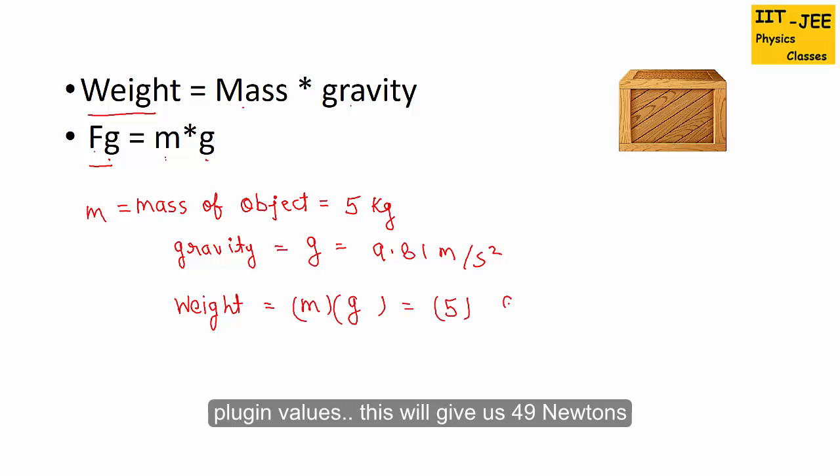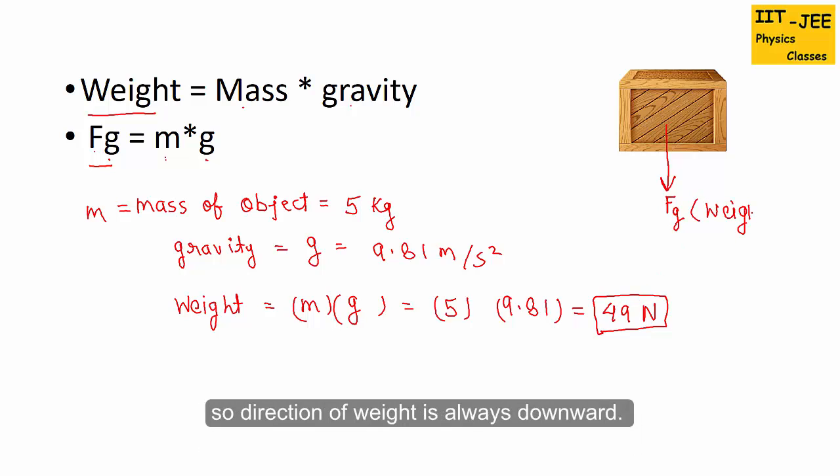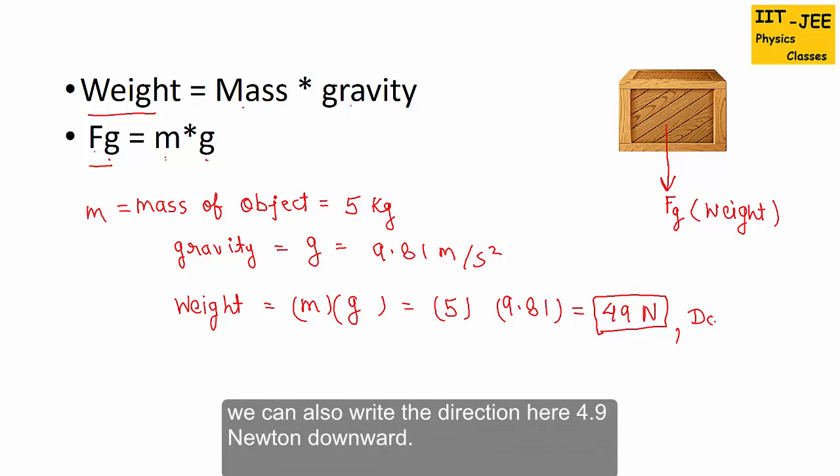Plug in values. This will give us 49 Newtons. So this 49 Newton is the weight of the object, and force of gravity always acts downward. This is also called weight, so direction of weight is always down. We can also write the direction here: 49 Newton downward.